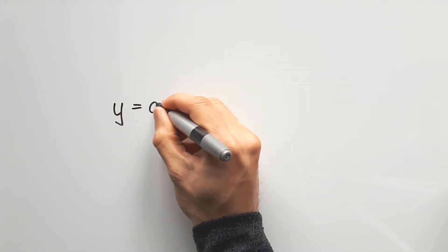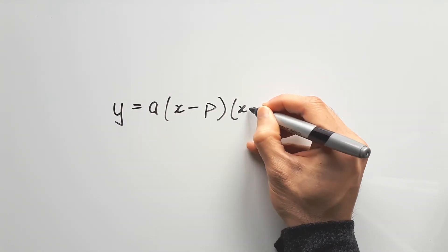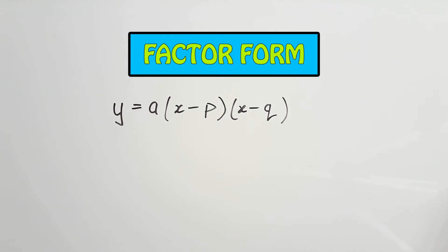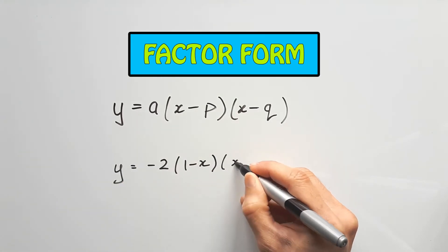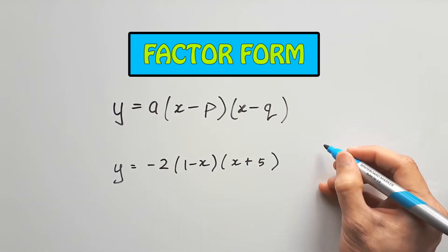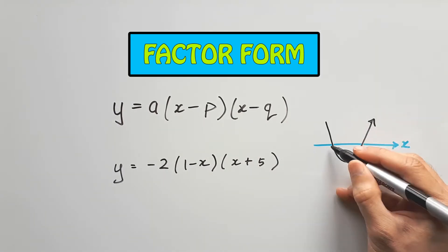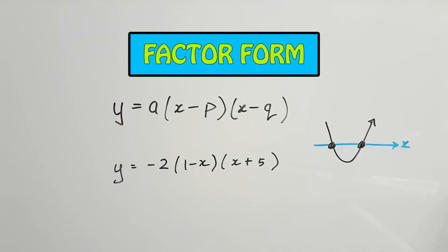y equals a times x minus p times x minus q is what we would call the factor form of a quadratic equation. It doesn't always look this nice, but you can always recognize it by its signature of two brackets. Here's an example: y equals negative 2 times 1 minus x times x plus 5. You only need the final direction and its x-intercepts to get a rough sketch of this parabola, so let's learn how to reproduce this and find the other critical points for a complete picture of the graph.